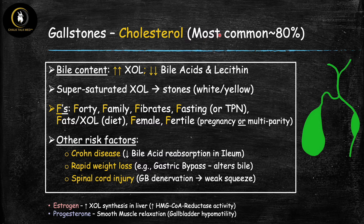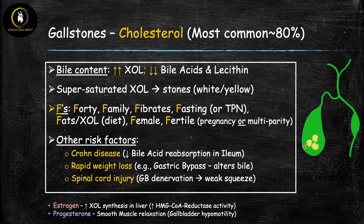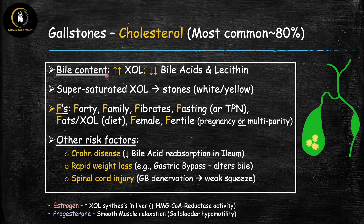Cholesterol gallstones are by far the most common type in clinical practice. The problem is straightforward: the bile has either too much cholesterol or not enough solubilizing agents (bile acids and lecithins). This causes excess cholesterol in bile to become supersaturated, forming sludge and stones with a white or yellow color — the non-pigment stones. The classic risk factors are remembered as the F's: 40 (age over 40), family history (genetic component), and fibrates (drugs for hypertriglyceridemia that inhibit the rate-limiting enzyme in bile acid synthesis, reducing bile acids).